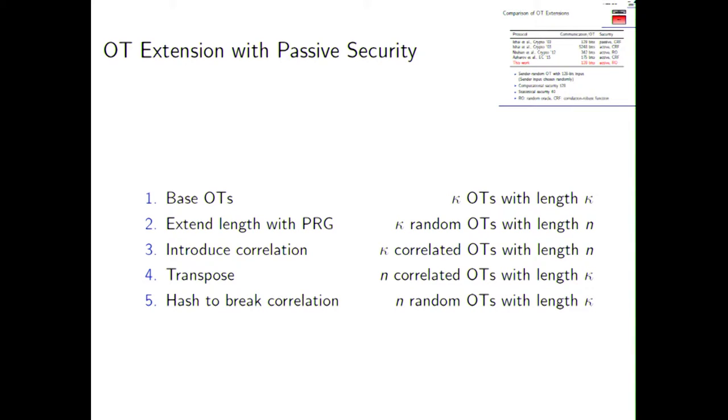Okay, so what's the idea, how does it work? So, as I said, we start with a few OTs, sometimes they're called seed OTs, or here we call them base OTs. And those are a few short OTs, so kappa, think of kappa as a security parameter, so that's like 128 in the example of the table of the previous slide. So 128 OTs of length 128. And then in the first extension step we extend the length with a PRG, and as a result we get kappa random OTs of length N, and now imagine N is big, much bigger than kappa.